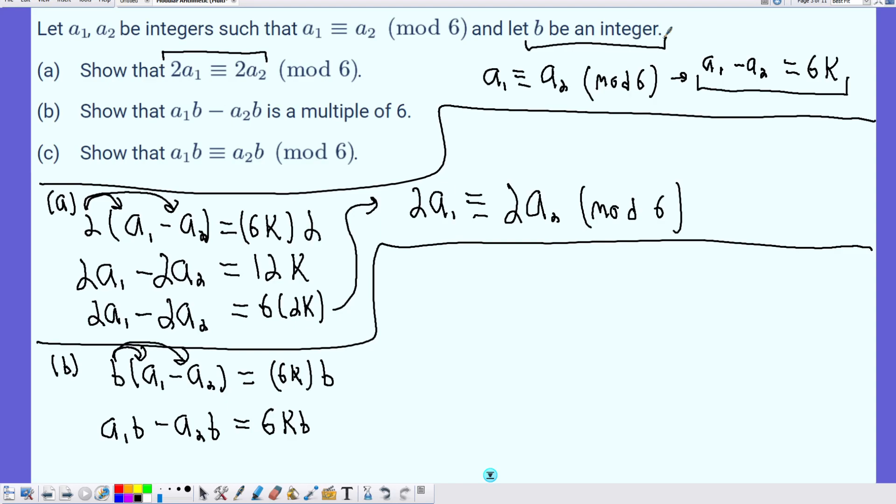Because a whole number times a whole number, there's no way that's going to be a decimal or turn into a fraction. So we have that it's 6 times an integer, meaning it's a multiple of 6.